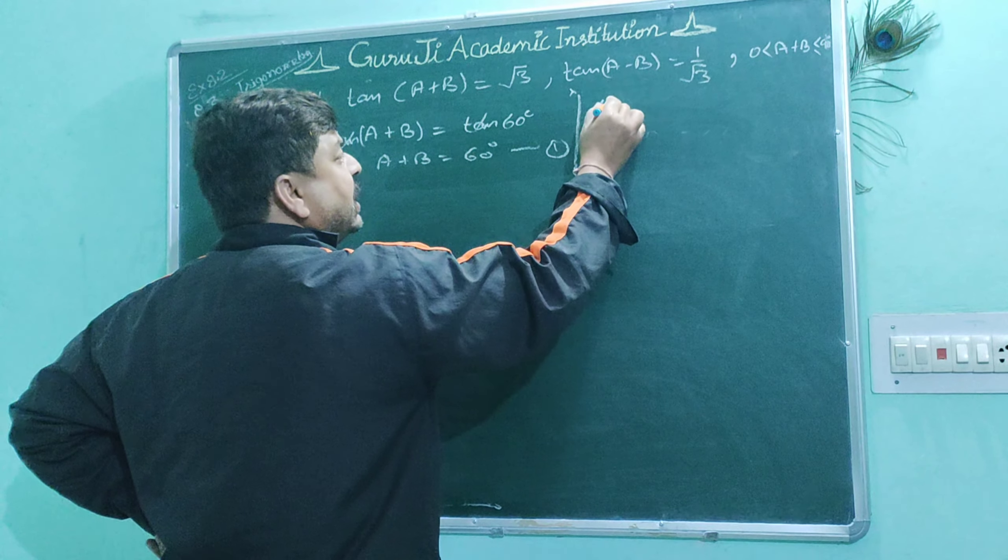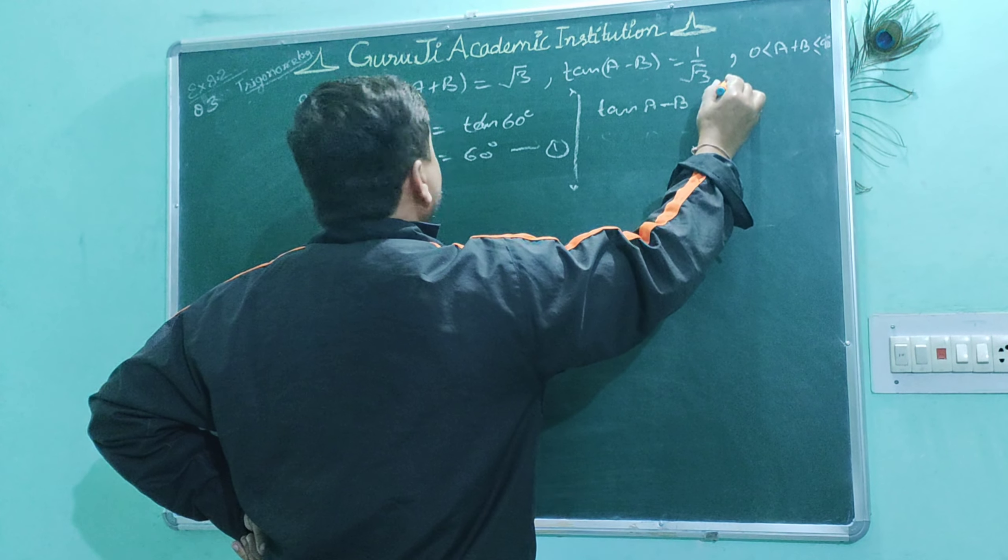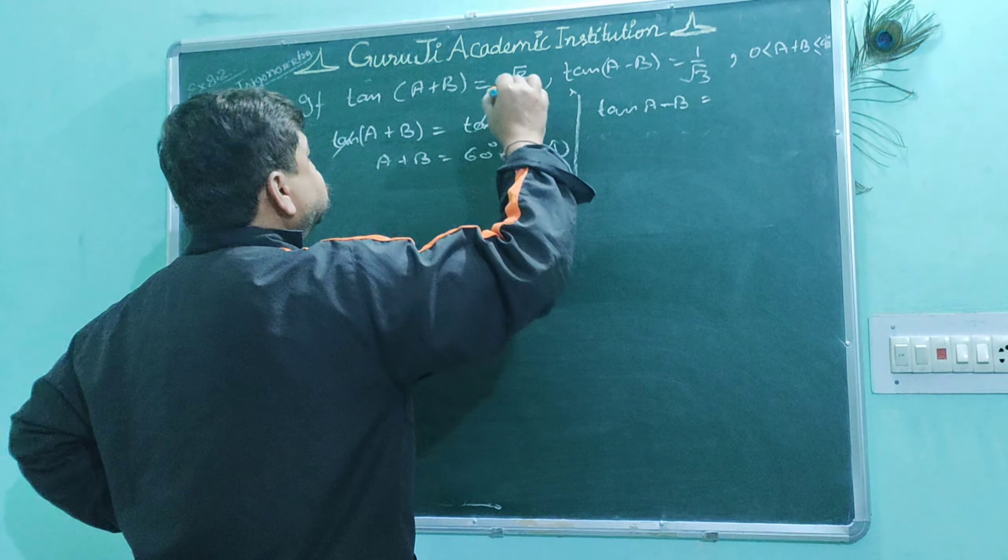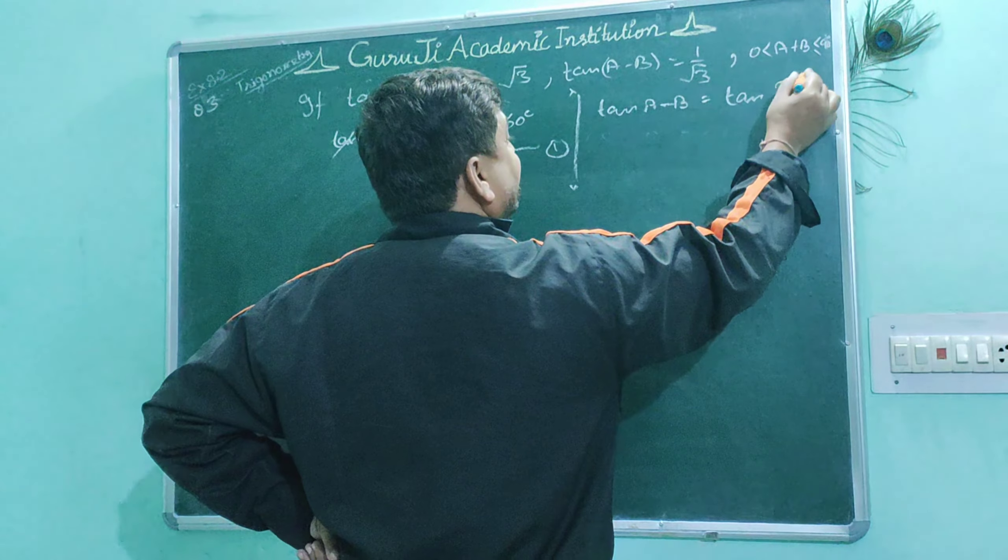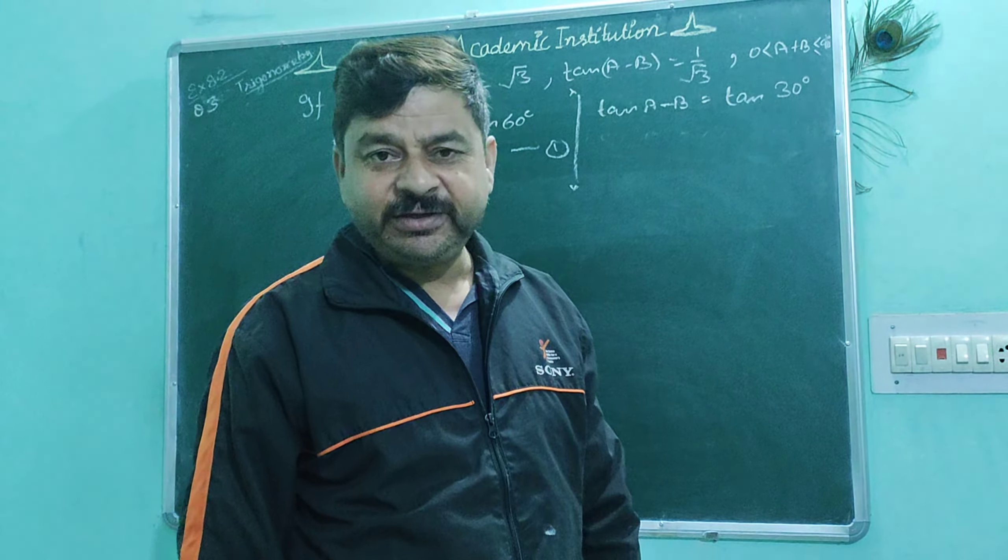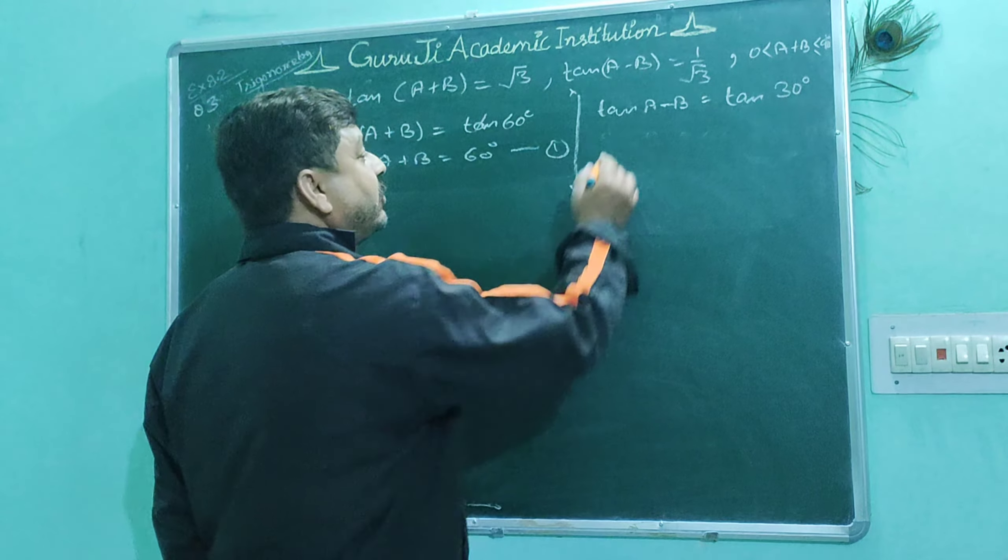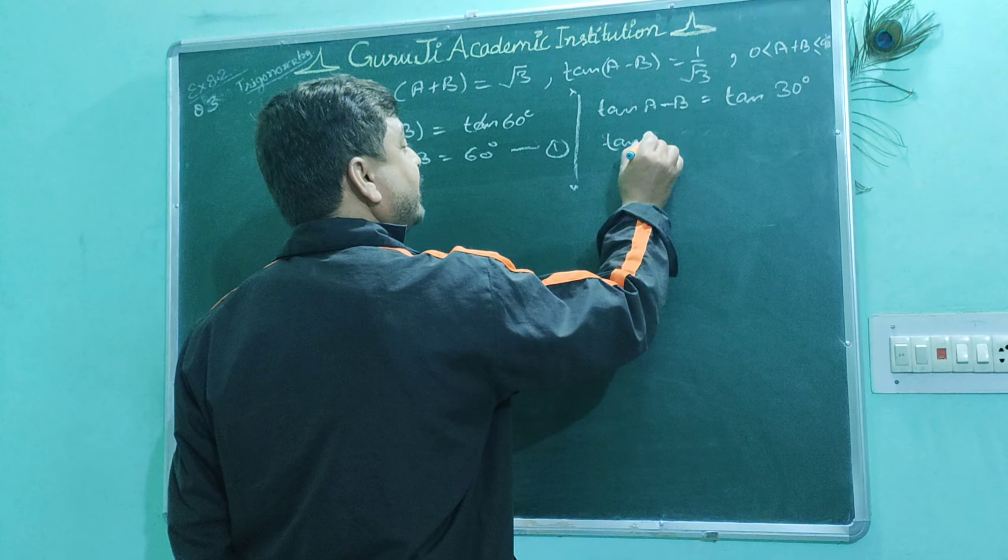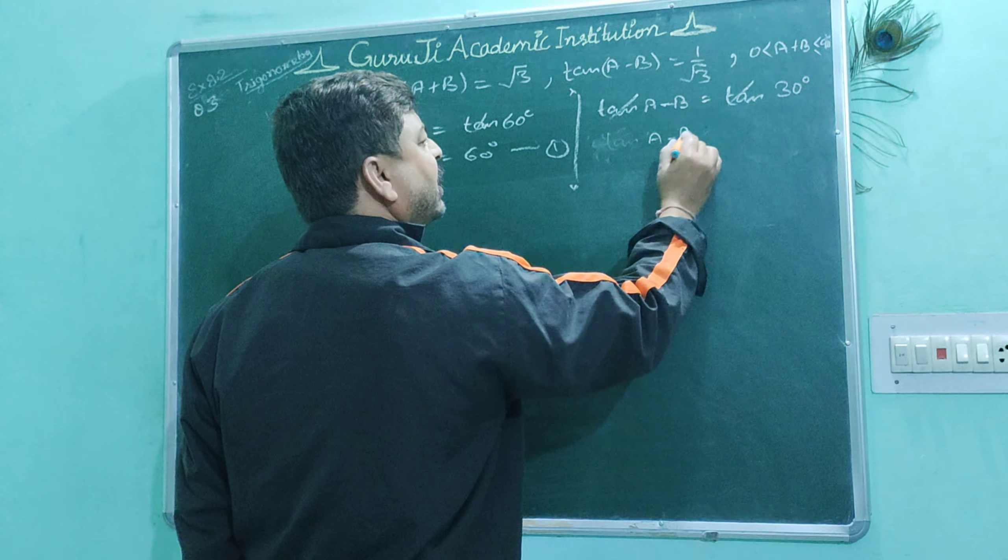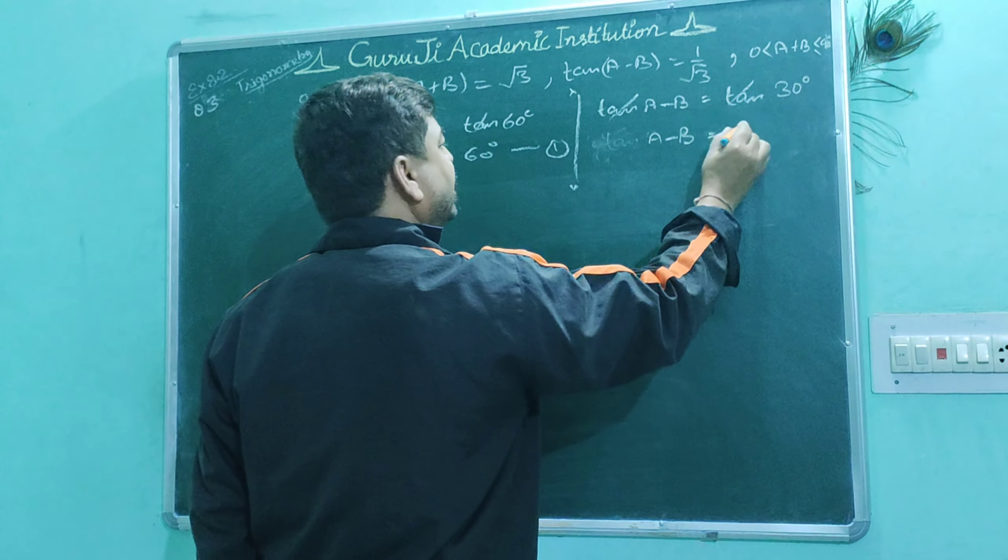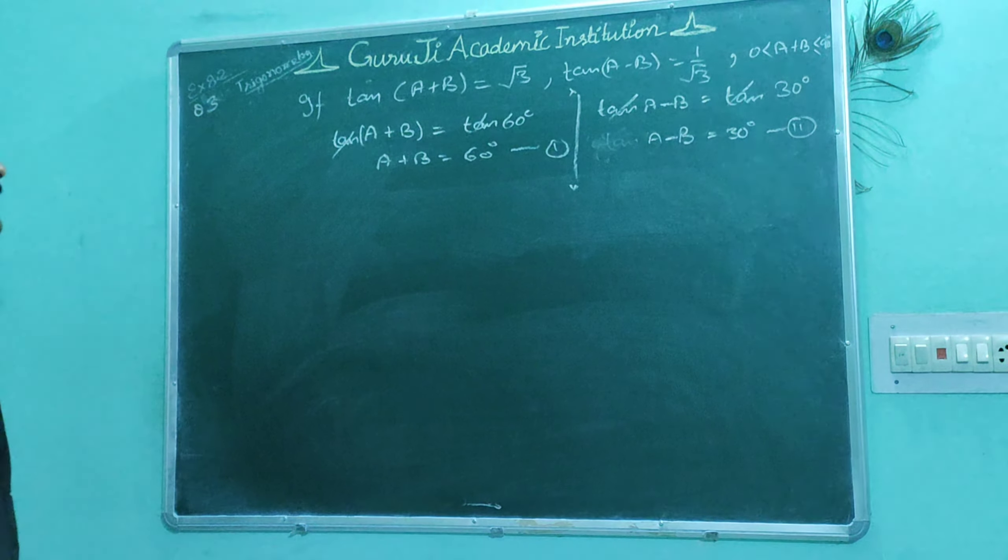Now, tan(a-b) equals 1/√3, which is tan 30 degrees. So we can write a-b equals 30 degrees. That is equation number two.